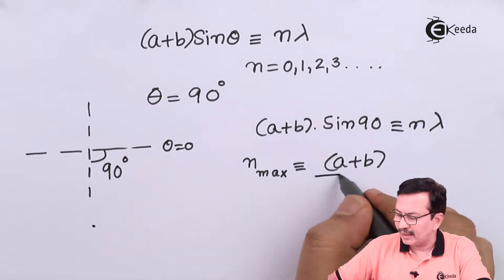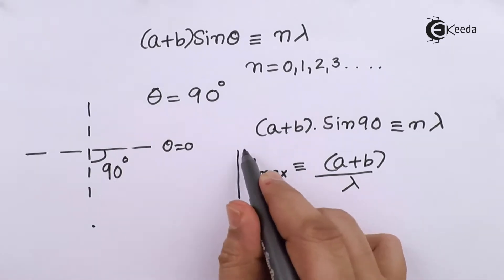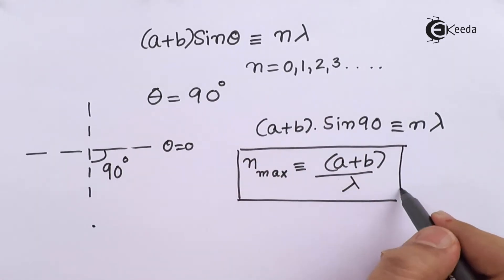So this is the maximum order that is available in a grating. So this is an expression for the maximum order that can be observed in a grating.